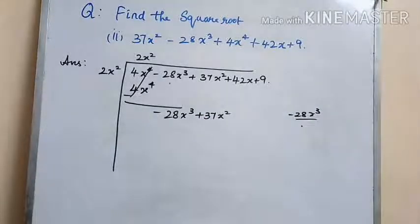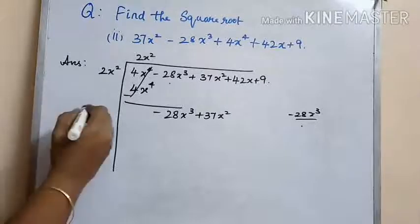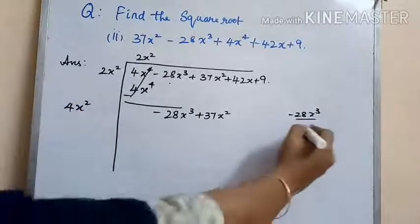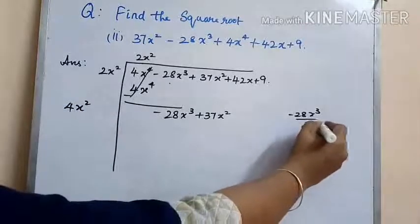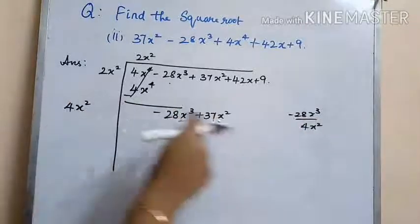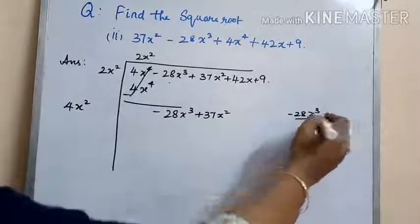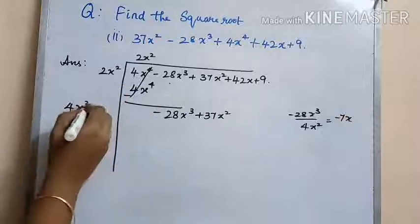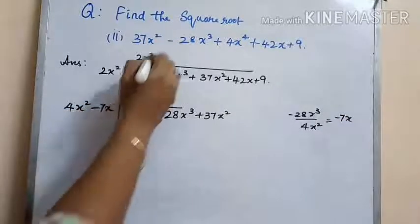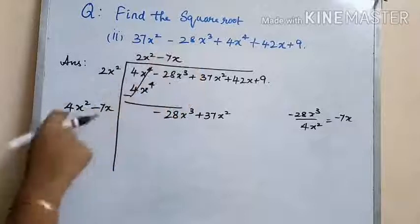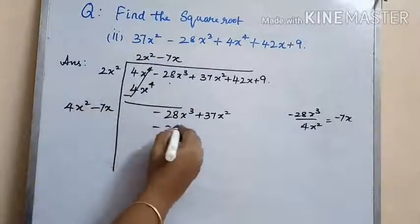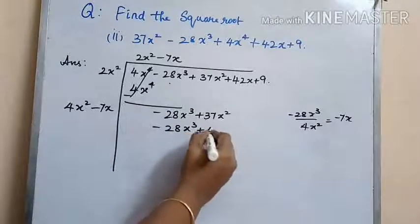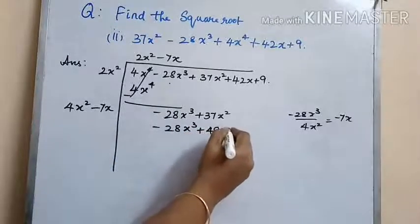We have to divide minus 28x cubed by 4x squared, because we double 2x squared to get 4x squared in the next step, which gives minus 7x. That should be written in the quotient part and on the left side of the division. So we get minus 28x cubed plus 49x squared.